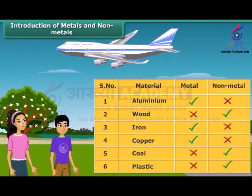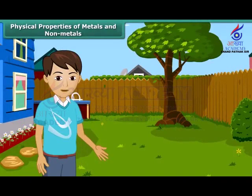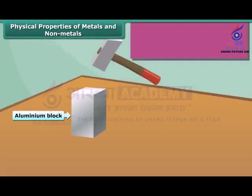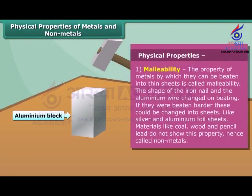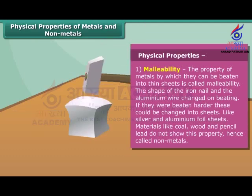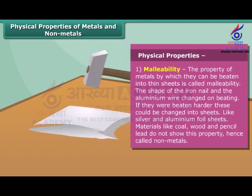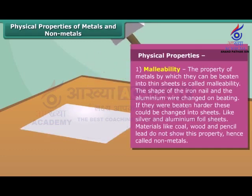Friends, we use many things in our daily lives. These are made up of metals and non-metals. Now let's know about their properties. At first, we know about the physical properties. The first property of metal is its malleability. By this property, the metals can be beaten into thin sheets. Non-metals don't show this property.